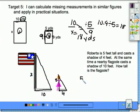Let's put Roberta as our first ratio. She's 5 feet tall and her shadow is 4 feet. We don't know how tall the flagpole is. But the flagpole's shadow is 10 feet. So I have a ratio of 5 over 4 equals x over 10.